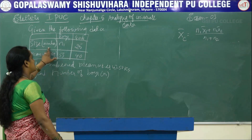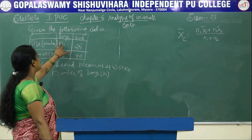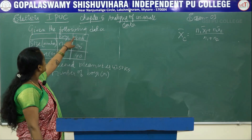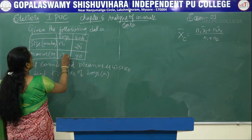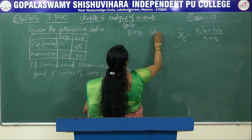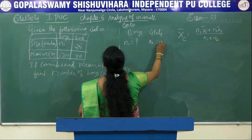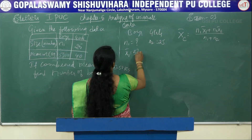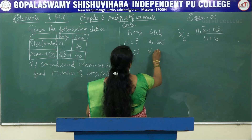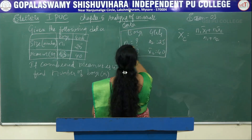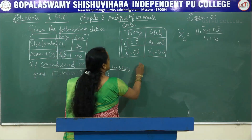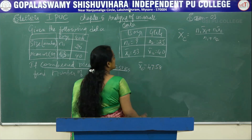In this problem, size means number of observations. The number of boys n1 is not given. n2 = 25 (girls), x̄₁ = 53 kg (boys), x̄₂ = 40 kg (girls), and the combined mean weight x̄c = 47.58 kg.